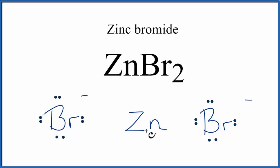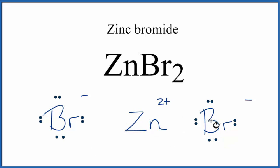The zinc lost two electrons, so it will have a 2+ charge. So we have this positive charge here and then these negatives — positive and negative opposites attract, and that's what forms the ionic bond.